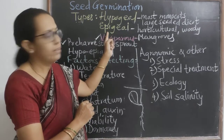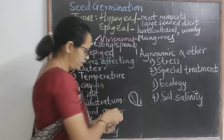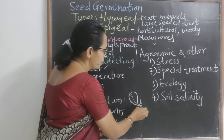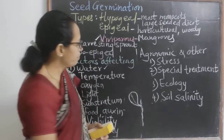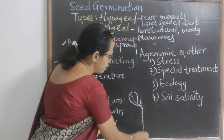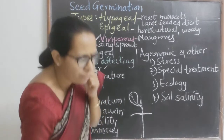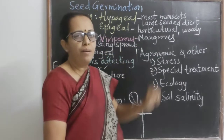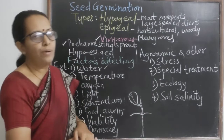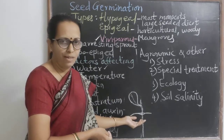The second type is epigeal germination, which is exactly opposite. When sprouting occurs, the cotyledons come up above ground because of the slow growth of the epicotyl. We observe this in most horticulturally used plants and woody plants — they show this type of germination.